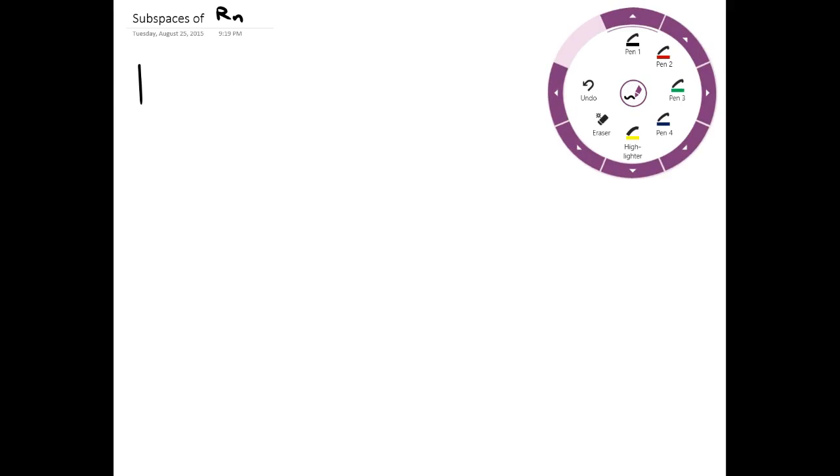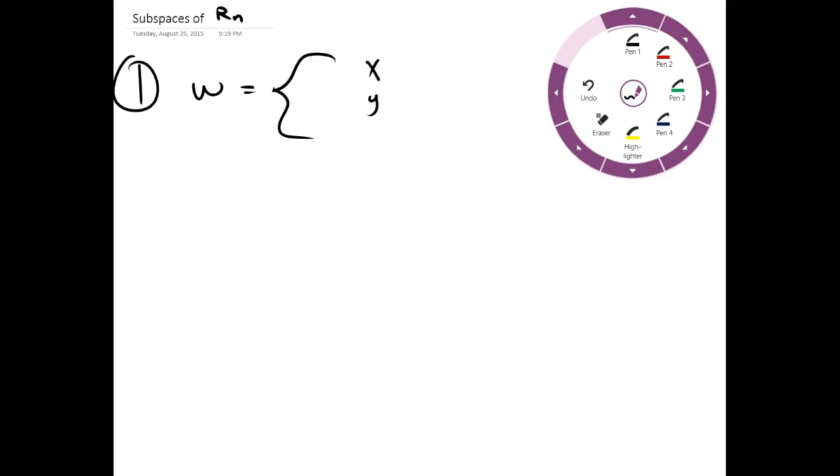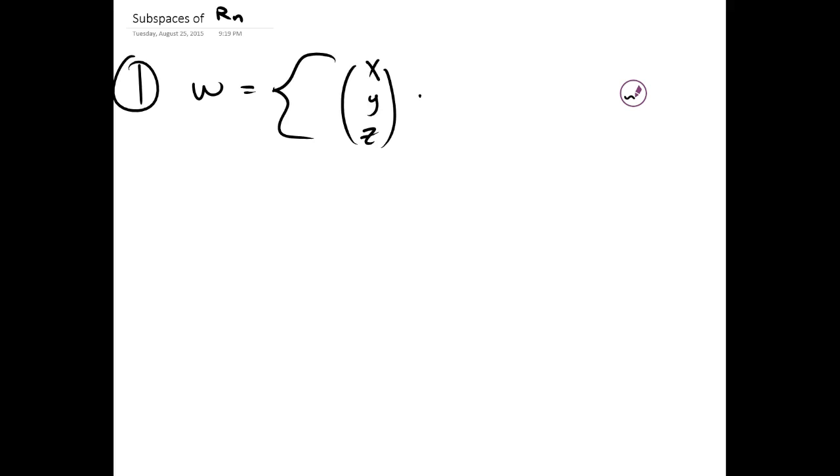We're going to do some examples for subspaces of R^n. Our first example is we are given this space. This is a subset of R^n, particularly R^3, that is, all points (x, y, z) such that x plus y plus z equals 1.